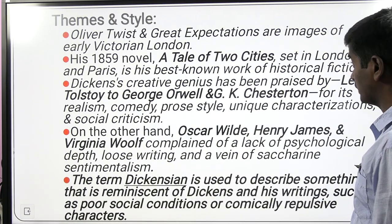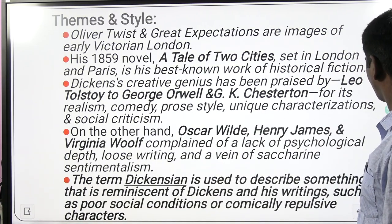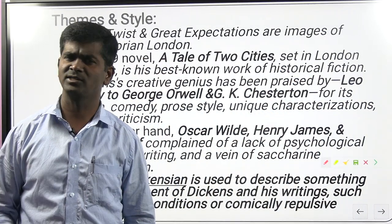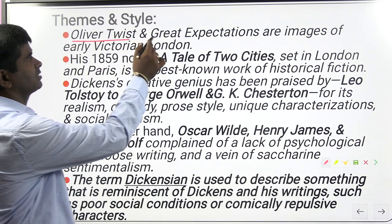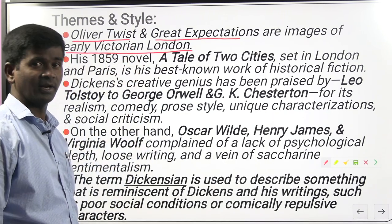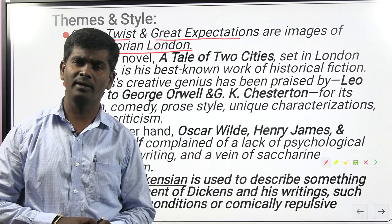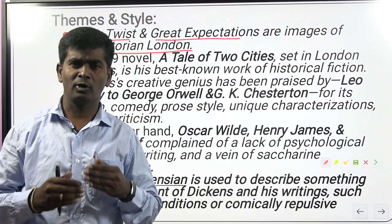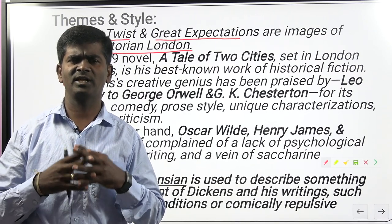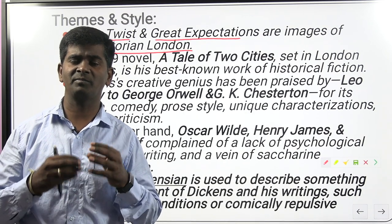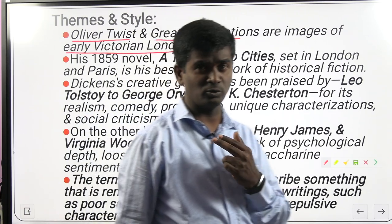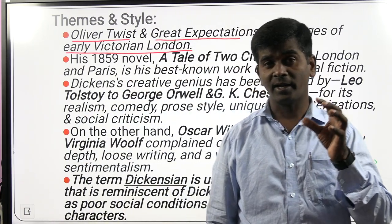With regard to the themes and style used by Charles Dickens — Oliver Twist and Great Expectations are images of early Victorian London. London not only became a symbol for the world in terms of science, technology, education, and health, but his writings in these two novels also helped readers understand the culture of London — its robbers, bandits, and child thieves.